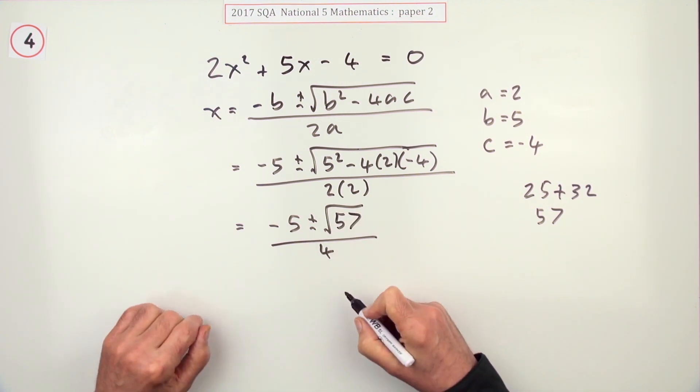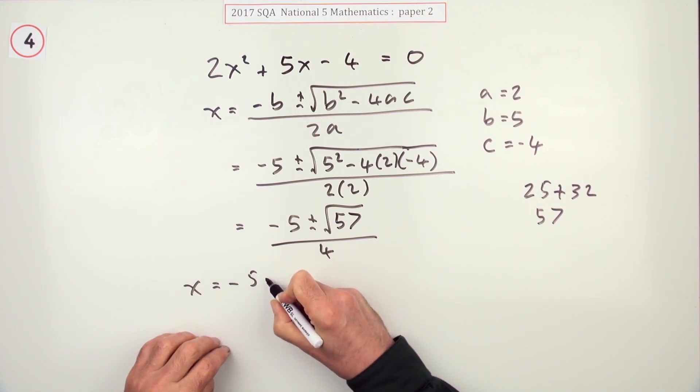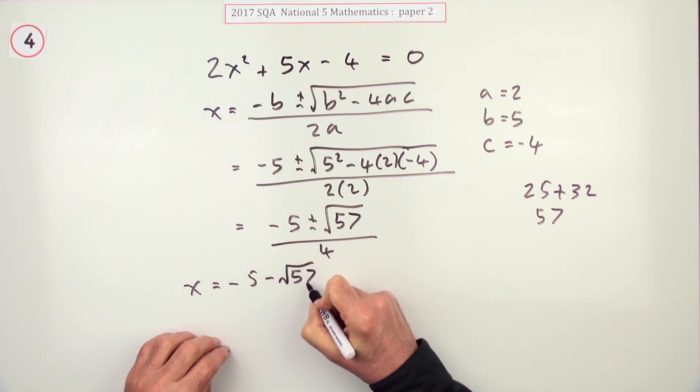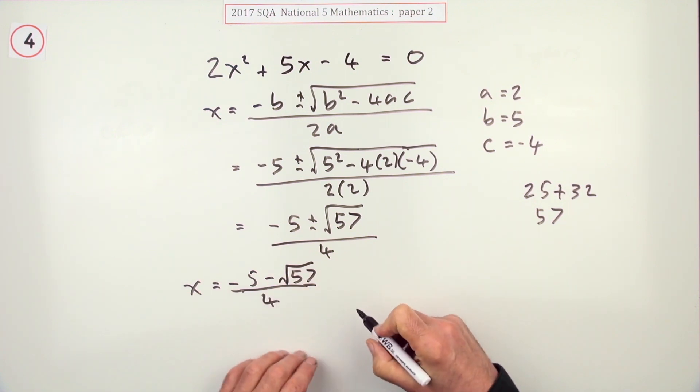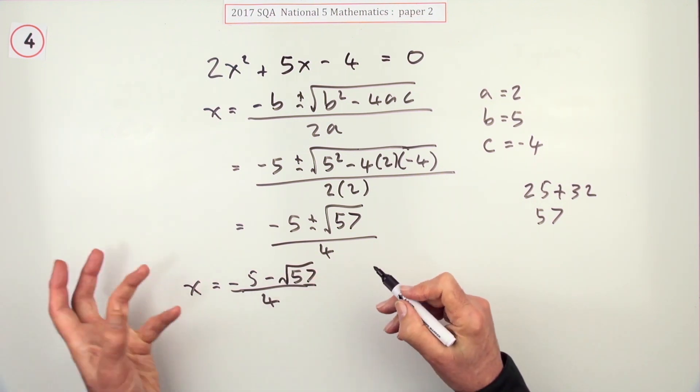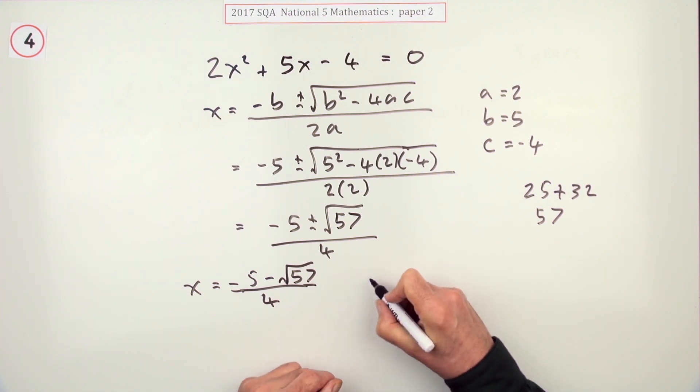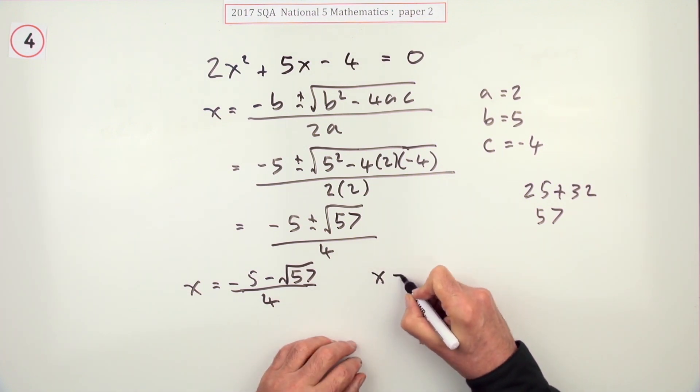The two answers I'm going to get will be -5 plus or minus. Just tuck that under there so it doesn't fall off the edge. The minus one is going to give you the smallest answer in numerical order. The other answer will be...